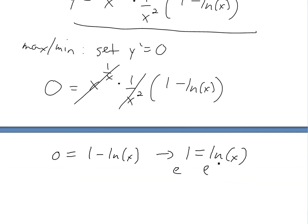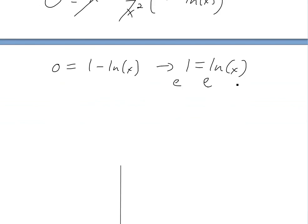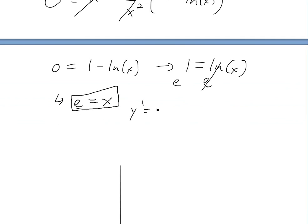You can raise e to the power of both sides. When you have e to the ln x, the e and ln cancel. So basically we're left with e equals x. So the slope is zero at x equals e.